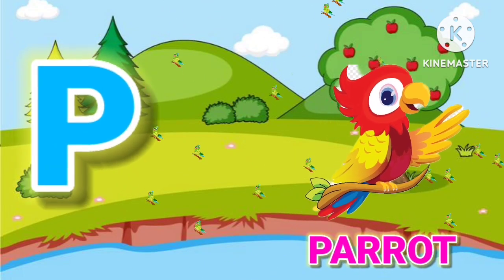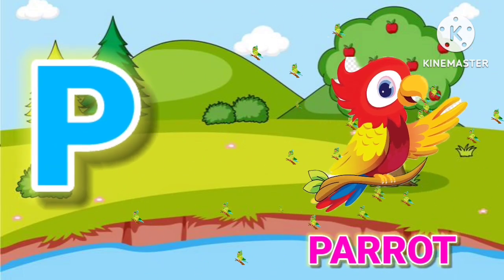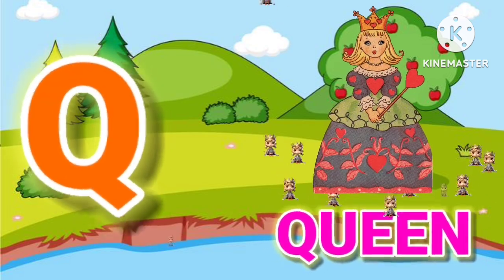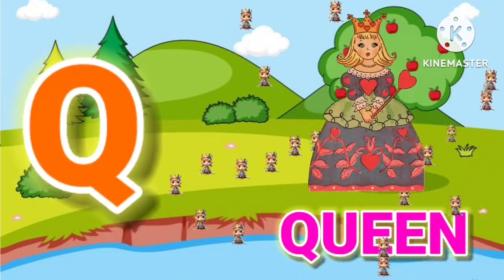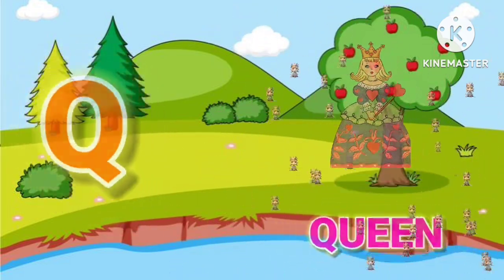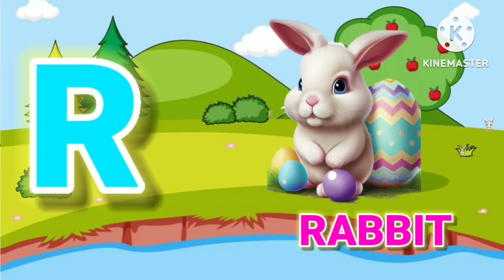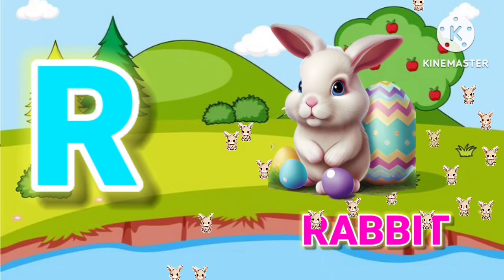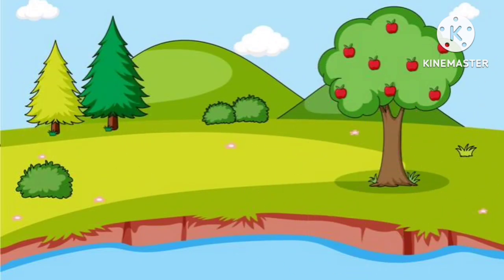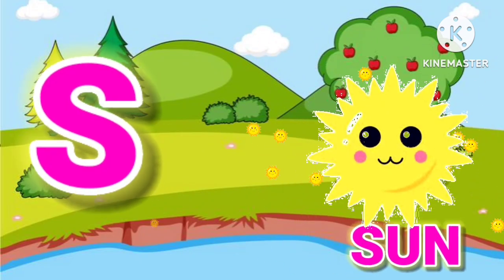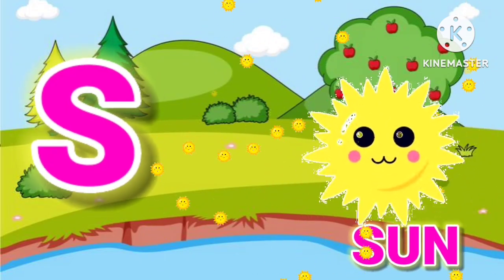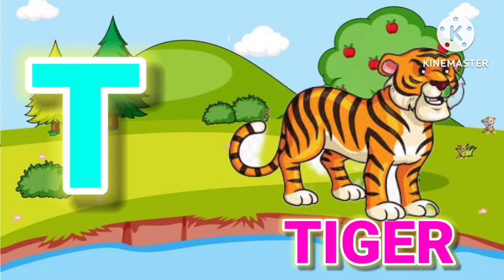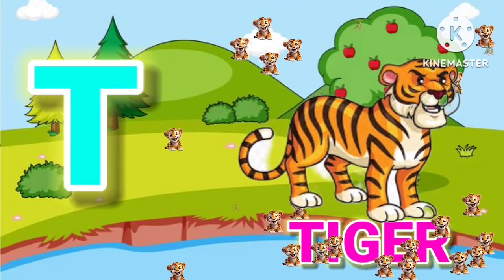P for parrot. Q for queen. R for rabbit. S for sun. T for tiger.